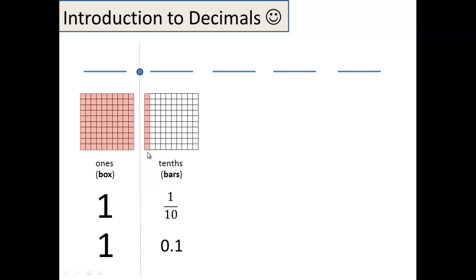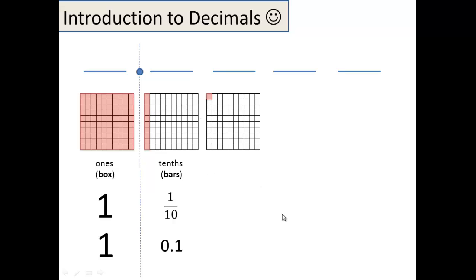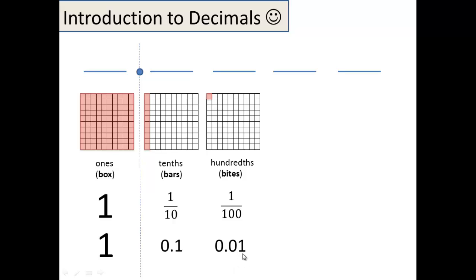Now you can keep going further and further into decimal land. You cut this up into ten pieces — you take one tenth of this, and you have that. The hundredths, which we call bytes, are one out of a hundred. And because there are two place values away from the decimal point, you can see that here. That's one hundredth — one byte.